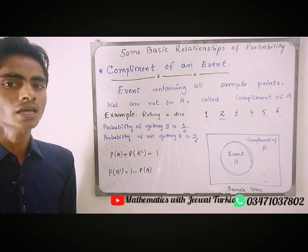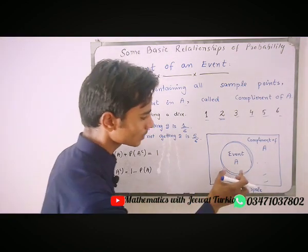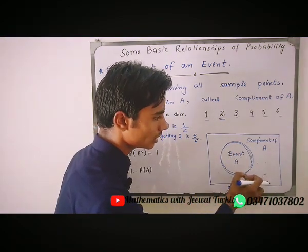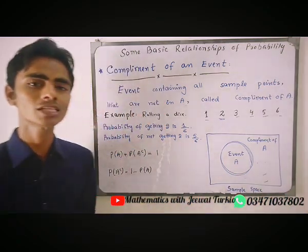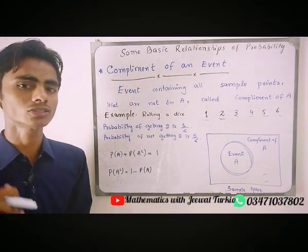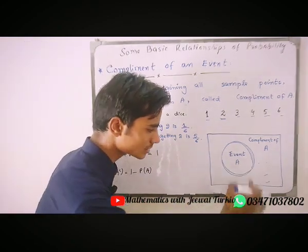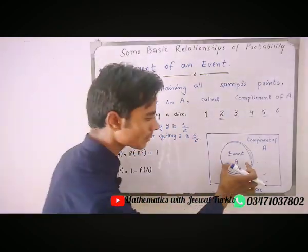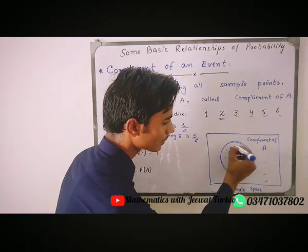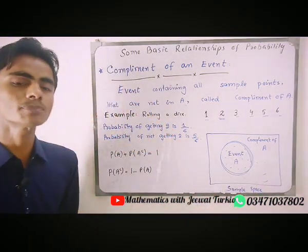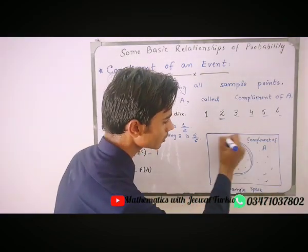If we look at the complement of an event using an event diagram — let's suppose this is event A and this is the whole sample space. We know that event A is a subset of the sample space. So inside event A we have experimental outcomes that are the possibilities in event A, and outside we have the rest of the sample space.